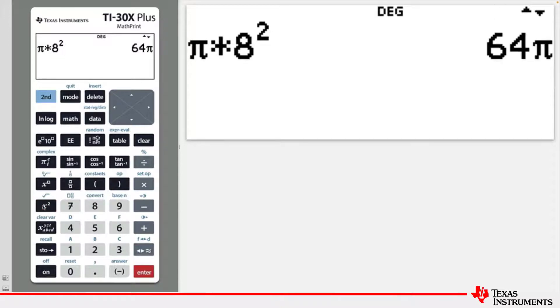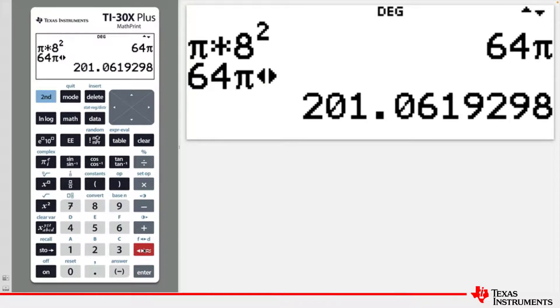Note that the answer is given as a multiple of Pi. If you are hoping for the decimal approximation, press the answer toggle key. This will give you an answer correct to 10 significant figures in float mode.